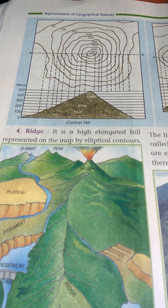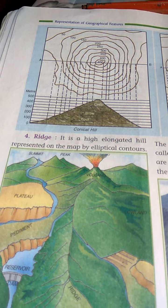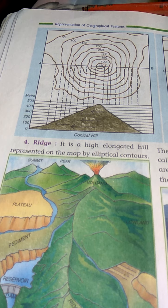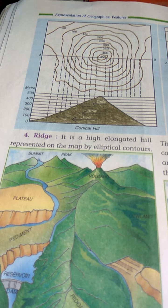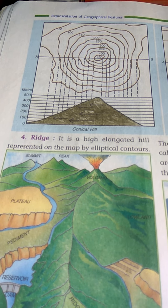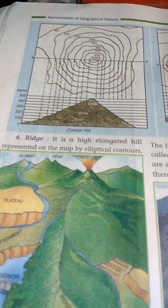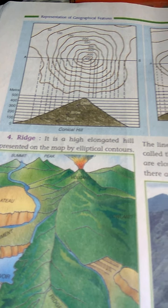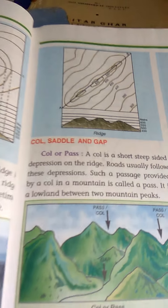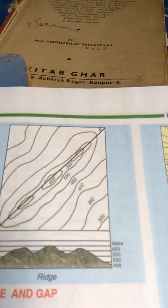Next one is ridge. It is a high elongated hill, represented on the map by elliptical contours. That is the diagram, shown on the top as well.